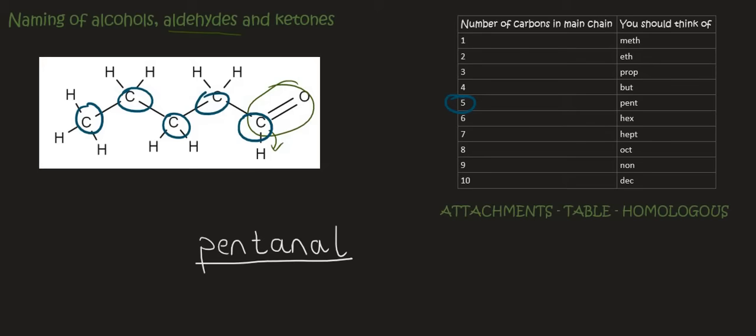So that's the name. You're going to say pentan and then you're going to have the AL part attached to that. And we don't have to specify which number it's on because the aldehyde part is always on the side. So it will always be on carbon number 1. So you're not going to do something like this. It's always going to be on carbon number 1. So this part here is correct.